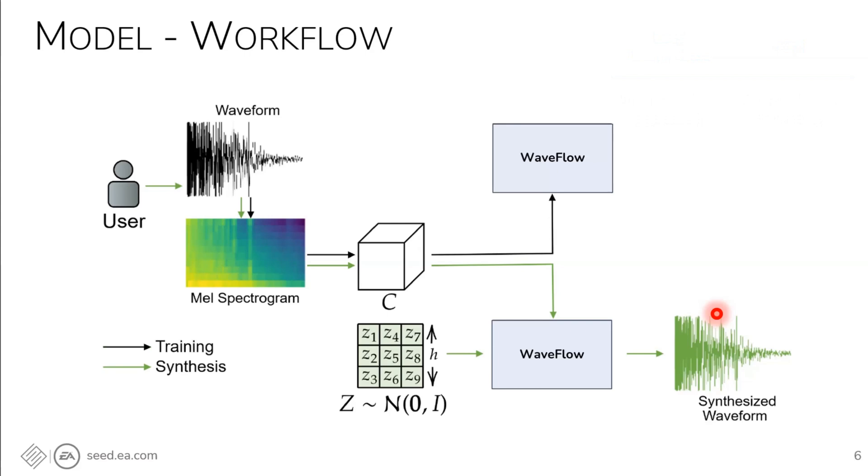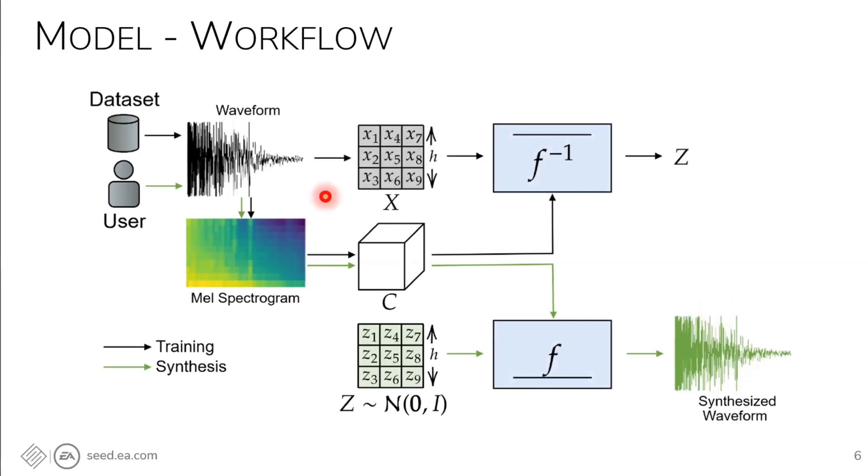So how do we train this? WaveFlow is a type of generative model called normalizing flow that is based on invertible models. That means that when we want to train the model, we have a dataset of sound effects that we want to learn from. And we take both the waveform and the low dimensional representation and input them into the model. This information is converted into a vector that should be close to the distribution we are using during generation.